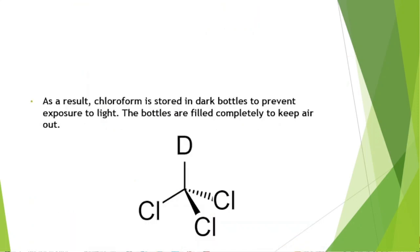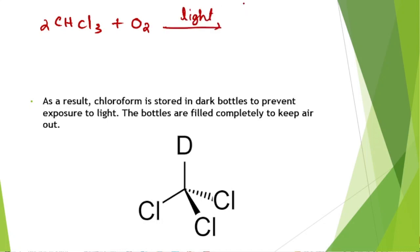Chronic exposure to chloroform — for example, working in a chloroform factory — may cause damage to the kidneys and liver. Chloroform slowly oxidizes in air in the presence of light to form a poisonous phosgene gas (COCl₂) with the liberation of HCl. As a result, chloroform is stored in dark bottles to prevent light exposure.